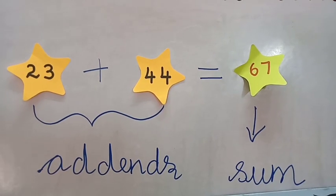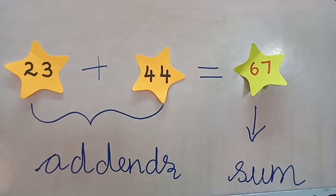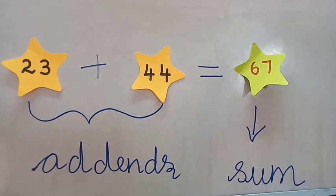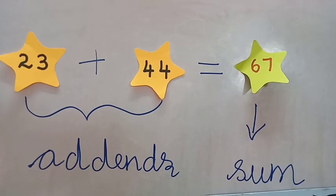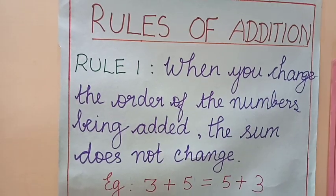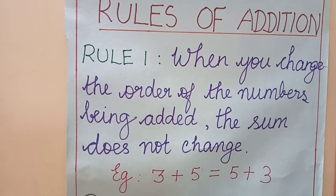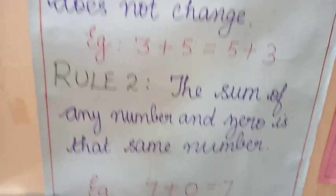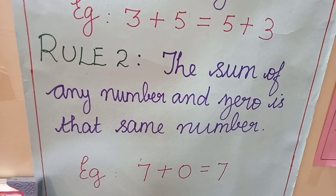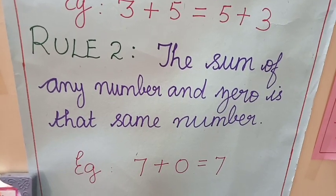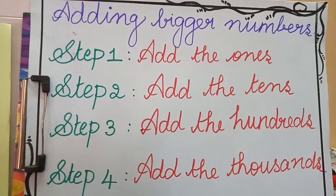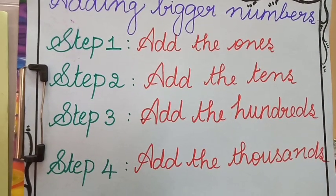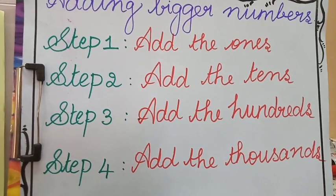That's it for today's class, children. Let's recap whatever we have learnt. We have learnt about the terms of addition: the numbers that we add are called the Addends, and the answer is called the Sum. Then we learnt about the rules of addition: when you change the order of the numbers being added, the sum does not change; and the sum of any number and 0 is that same number. Finally, we saw adding bigger numbers — there are 4 steps: add the 1's, add the 10's, add the 100's, and add the 1000's.